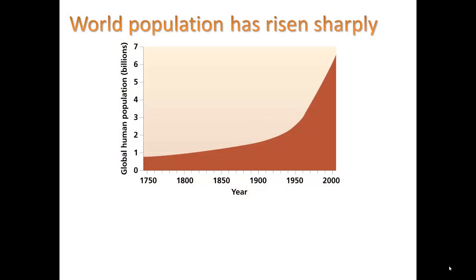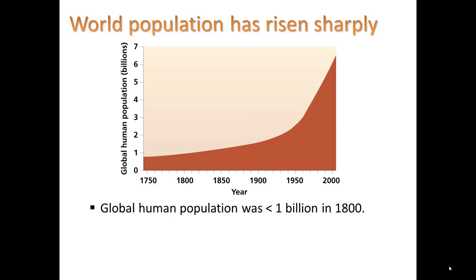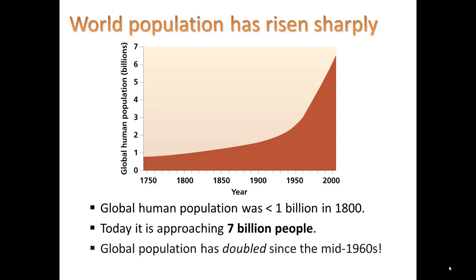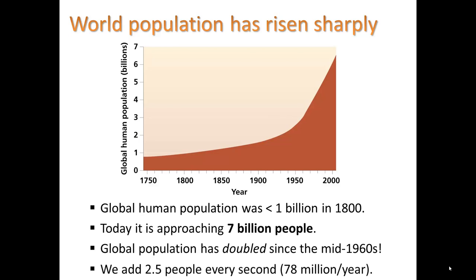We know that world population has risen sharply since the mid-1700s due to the industrial revolution. Global human population was less than 1 billion only about 200 years ago. Today it's approaching 7 billion people. Global population has doubled since the mid-1960s, and we add 2.5 people every second.